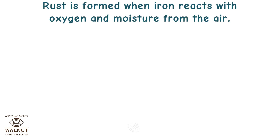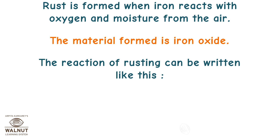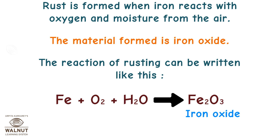Rust is formed when iron reacts with oxygen and moisture from the air. The material formed is iron oxide. The reaction of rusting can be written like this: Fe + O₂ + H₂O = Fe₂O₃, which is iron oxide.